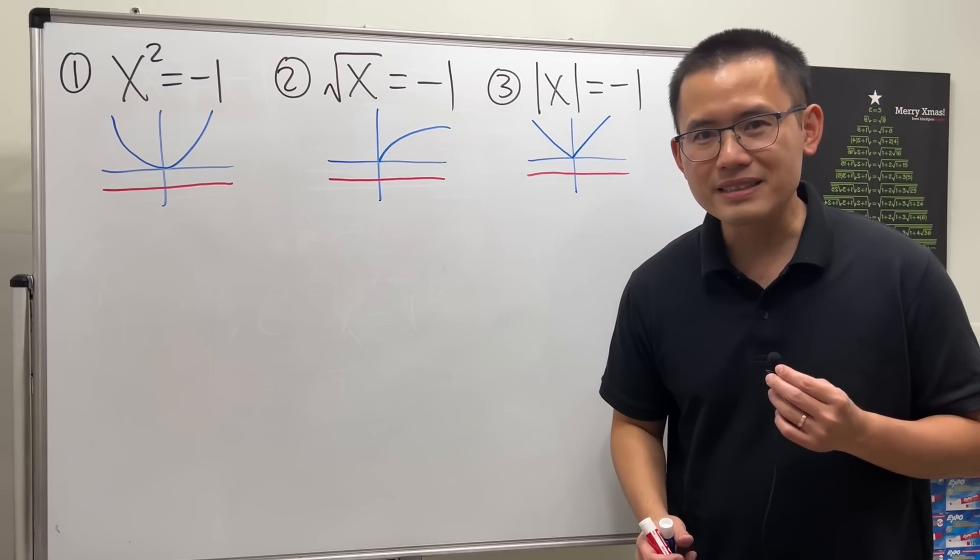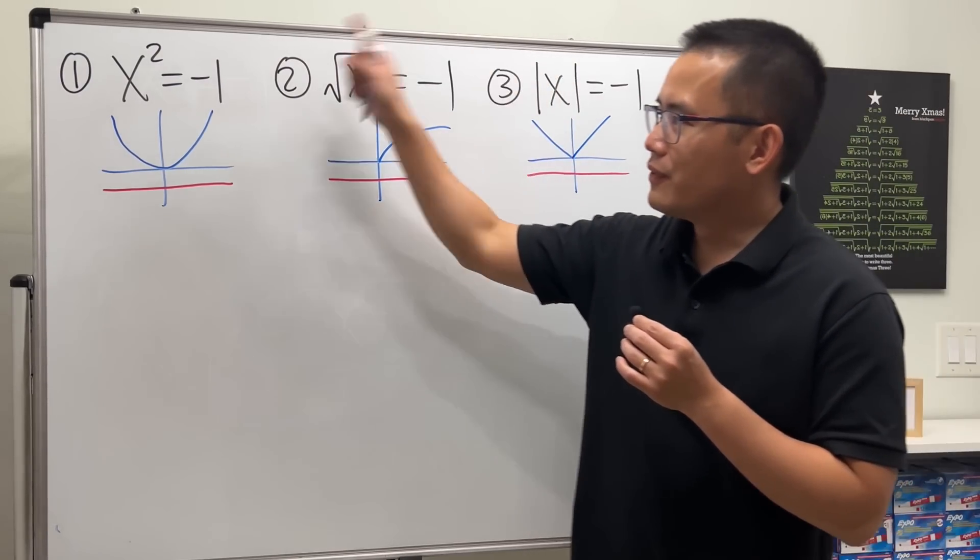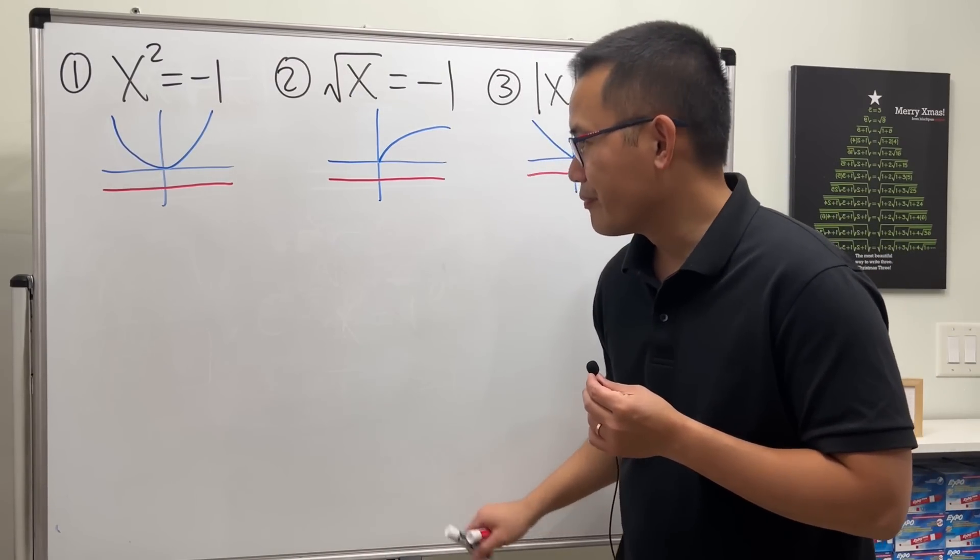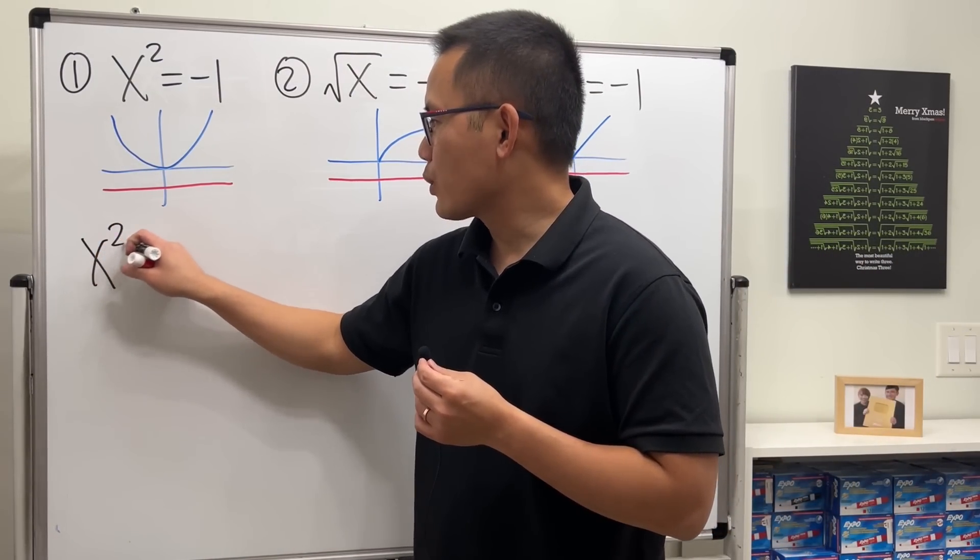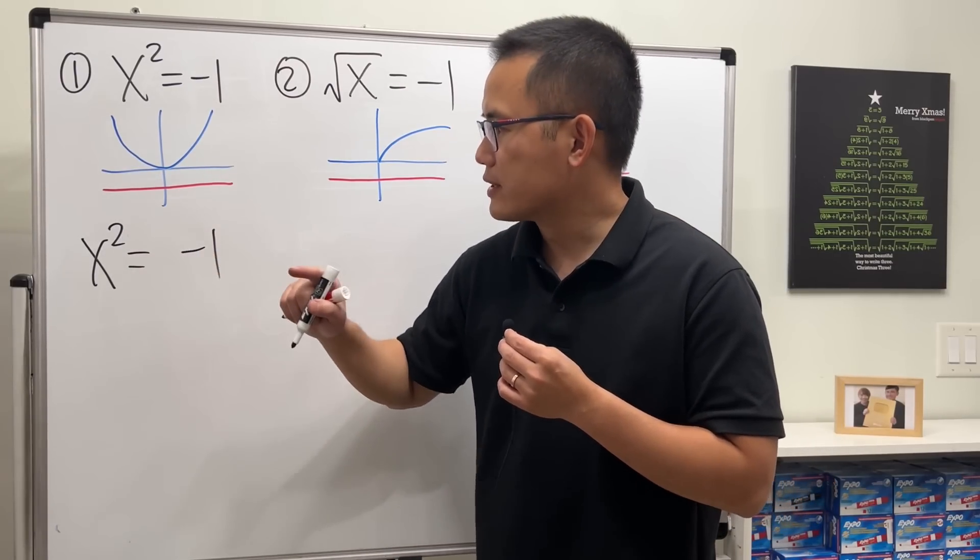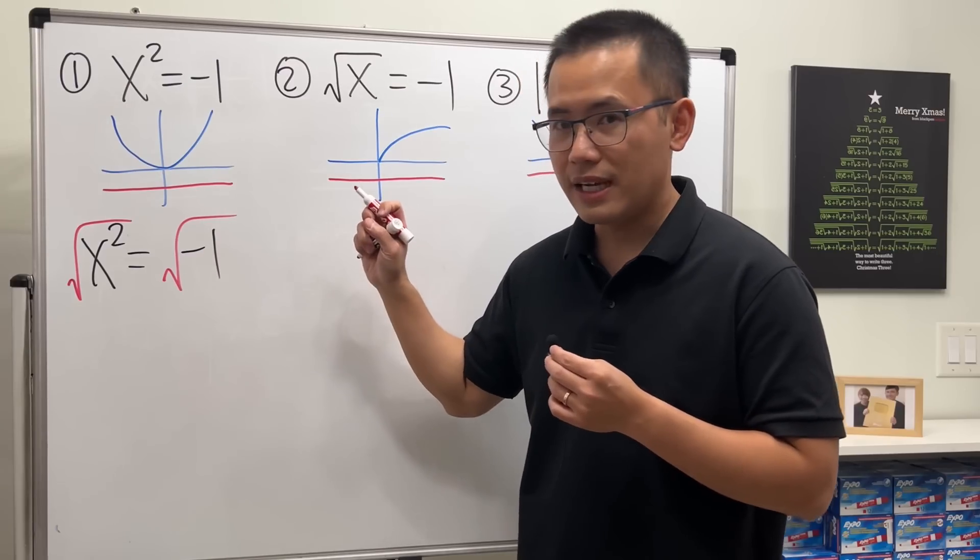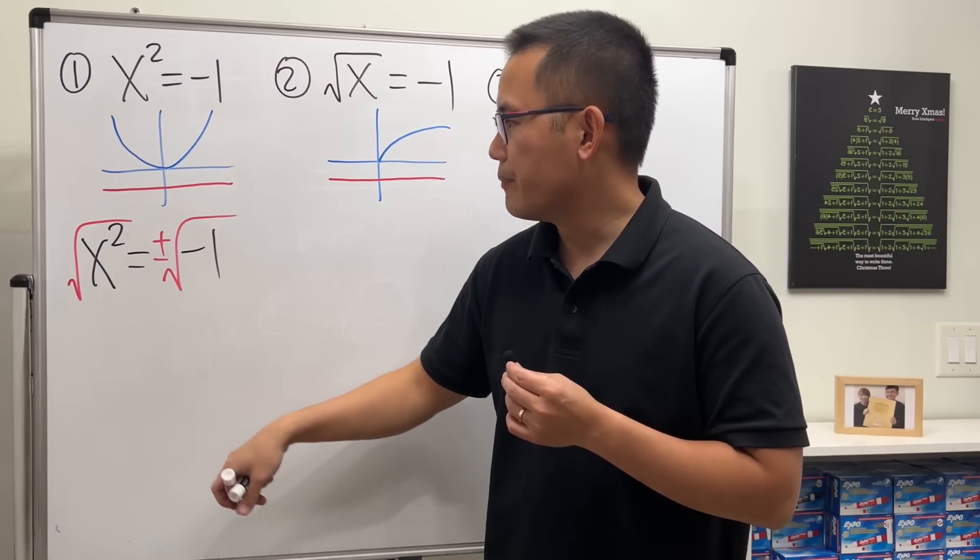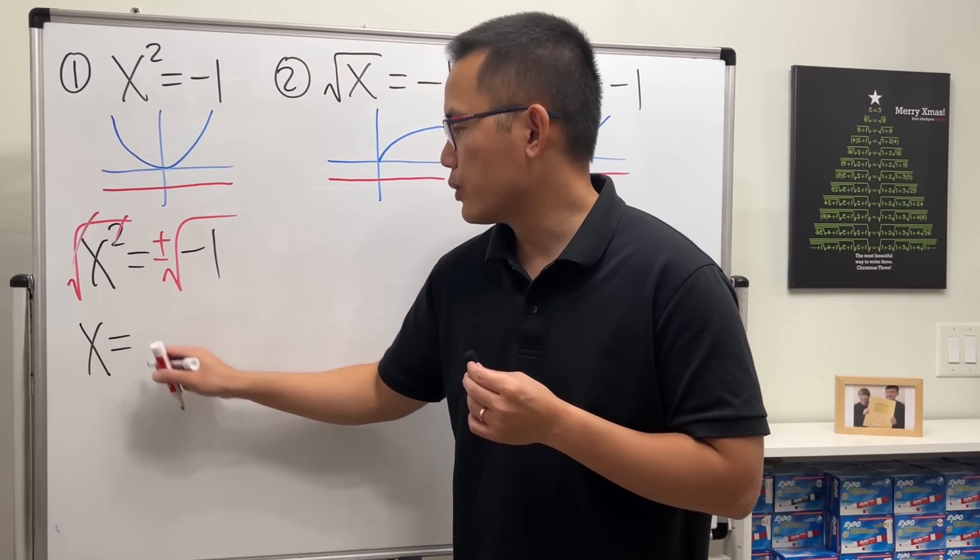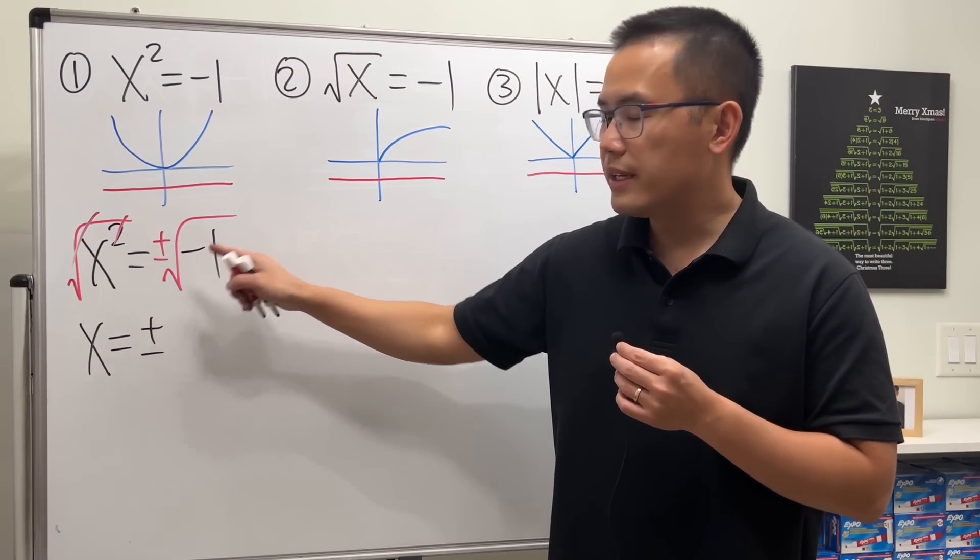Well, technically yes if you're just talking about the real numbers, but for the first one we can actually continue. Let me show you. Start with x squared equal to negative one. We want to get rid of the squared, and we can do so by taking the square root both sides, and don't forget the plus or minus.